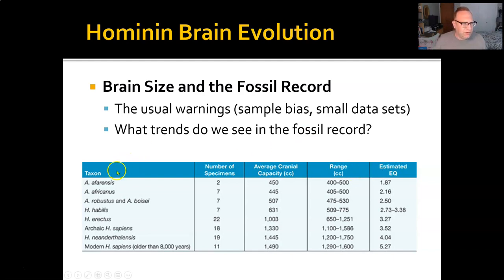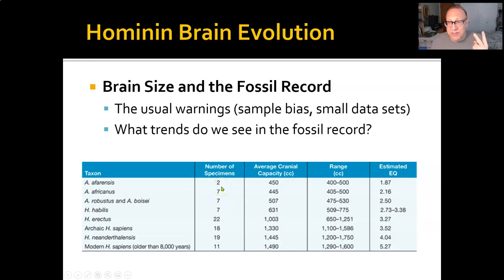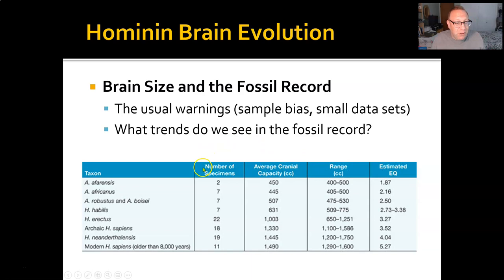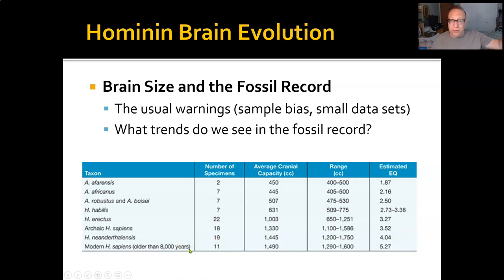I want you to notice a couple of things. First, for early Homo and the Australopithecines, we actually have very few crania complete enough to make volume estimations. When we're talking about afarensis, we've got two specimens with an average cranial capacity of about 450 cc's, but the range spans from around 400 to 500. So who knows — maybe the true average is much closer to 400. For now we'll use an estimated EQ of 1.87. As we get more recent — especially with Homo erectus, Archaic Homo, Neanderthals, and ancient modern humans older than about 8,000 years — we have more specimens and can get more reliable numbers.